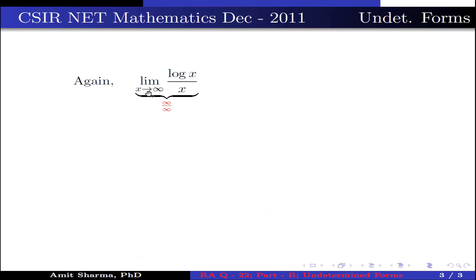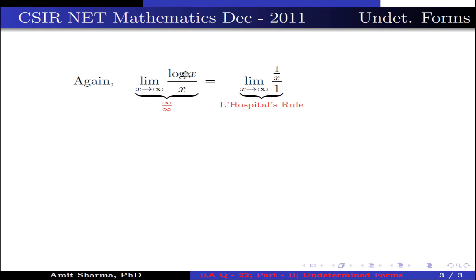Again, limit x approaches to infinity of log x by x. If we substitute the limit we get the infinity by infinity form. This implies we can write it as limit x approaches to infinity of 1/x divided by 1, by using L'Hôpital's rule. Here 1/x is the derivative of log x, and 1 is the derivative of x, which is further simplified as limit x approaches to infinity of 1/x.